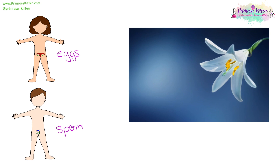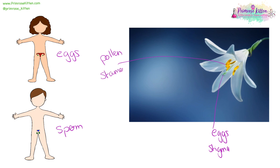In women the gametes are eggs, and in men the gametes are sperm. In a plant we have eggs still, and that is in the stigma. The male gametes in plants are pollen, and that is on the stamen.